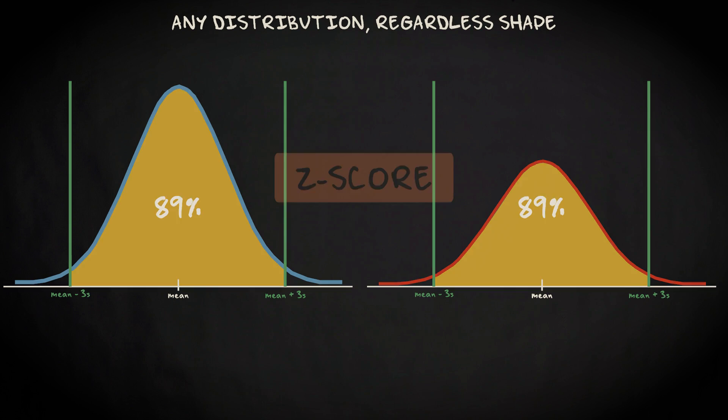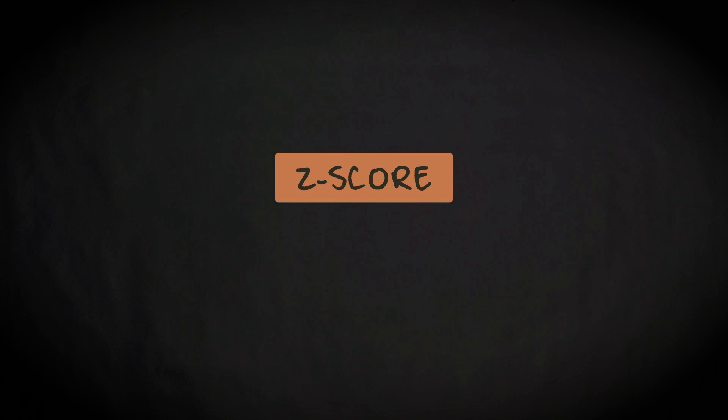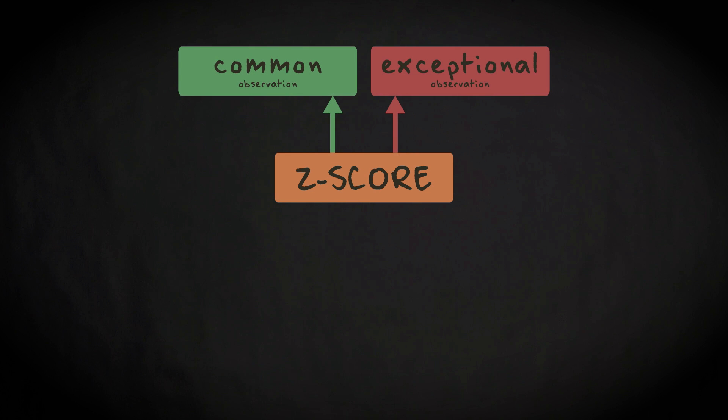So, in itself a z-score gives you, to a certain extent, information about how extreme an observation is.